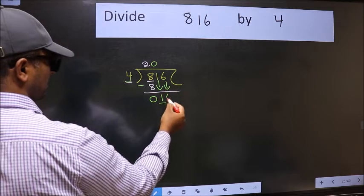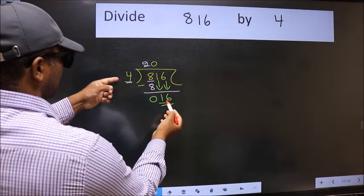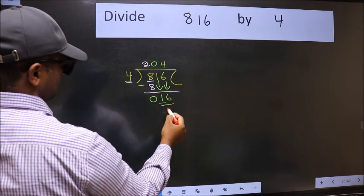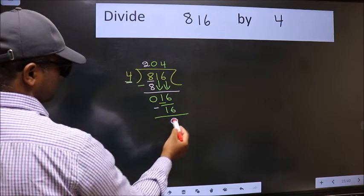Now 16. When do we get 16 in the 4 table? 4 times 4 is 16. Now we should subtract. We get 0.